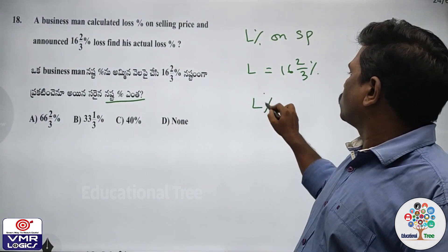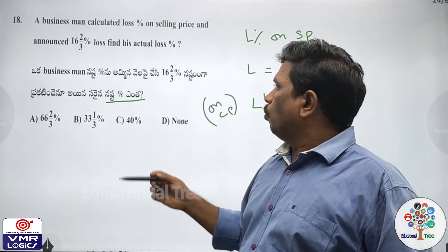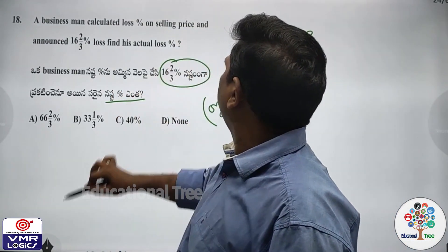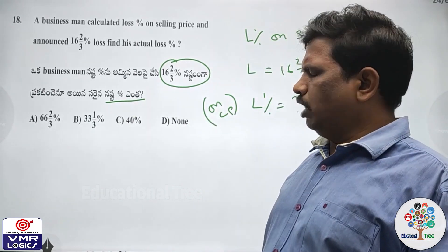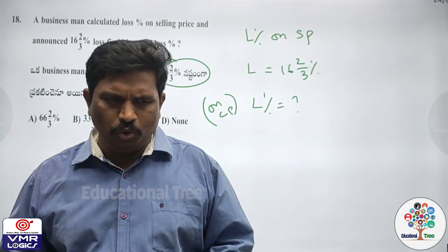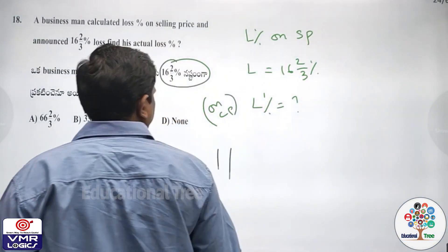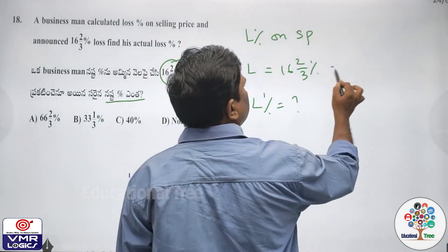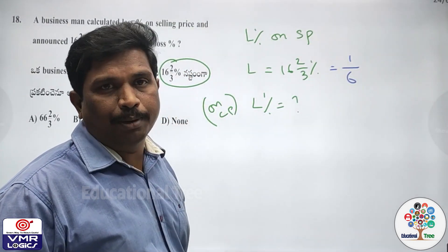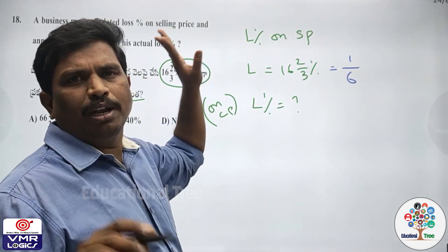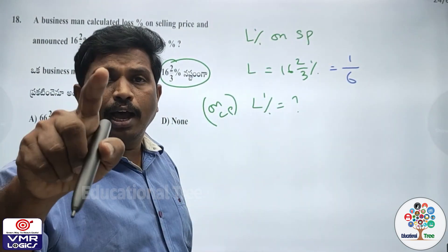What is the actual loss percentage? The actual loss percentage means on CP. What is the fraction value of 16 and 2 by 3? It is 1 by 6. In general, the loss percent formula is loss by CP into 100. But for the businessman, the loss percent formula is loss by SP into 100.